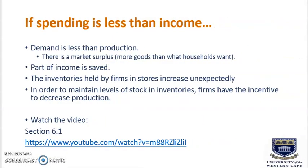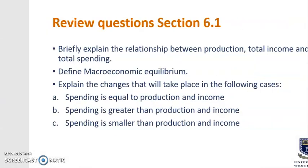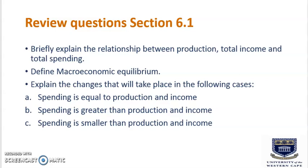If spending is less than income, demand is less than production, meaning there is a market surplus — more goods than households want. Part of income is saved, and inventories held by firms increase unexpectedly. To maintain stock levels, firms have the incentive to decrease production. Please click the link below for more information on section 6.1. You can also do the review questions for section 6.1 to check your understanding.